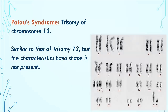Patau syndrome, also known as D syndrome or trisomy 13, involves an extra chromosome in the 13th karyotype. The major symptoms are somewhat similar to Edward syndrome — trisomy 18 — but individuals with Patau syndrome do not have the characteristic hand shape seen in Edward syndrome. All of these syndromes fall under the category of autosomal aneuploidy, taking place due to deformity in autosomal chromosomes.